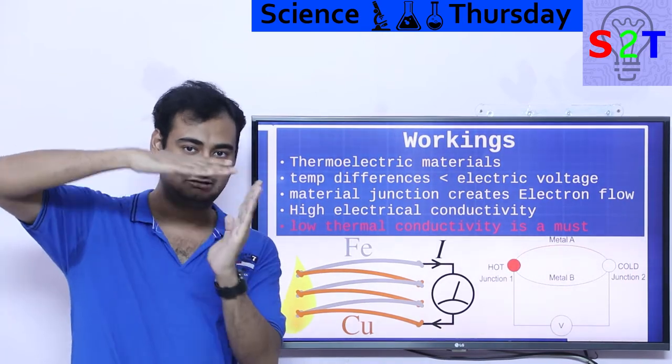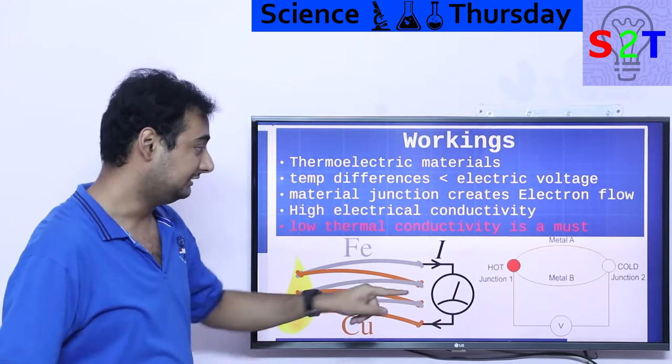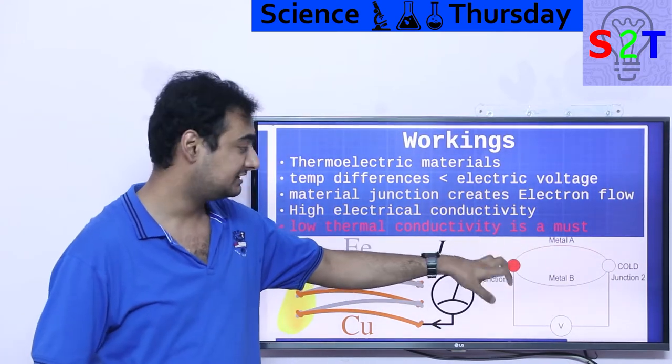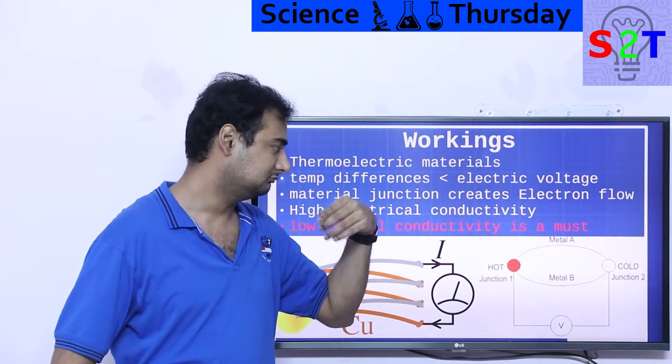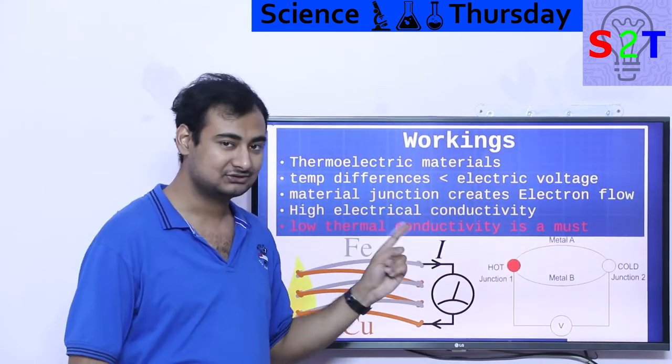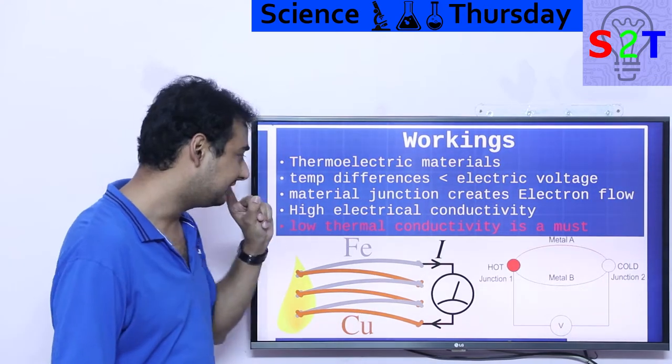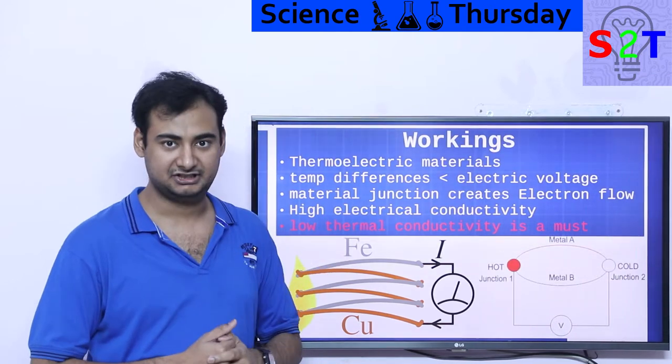And material junction creates that electron flow. It's not like if you have two parallel materials. Whenever they are touching at that place, it creates the whole thing. So if you have metal A and metal B and you're heating one side and another side is just ambient air, you're going to get voltage out of it.